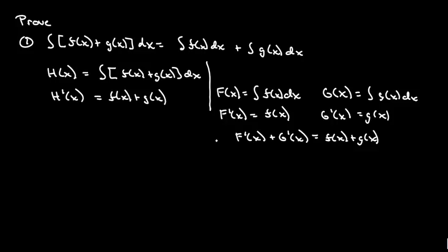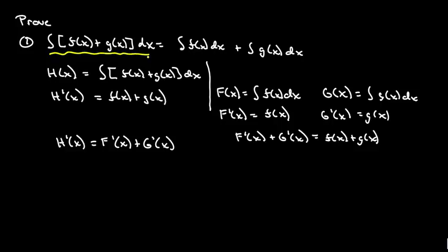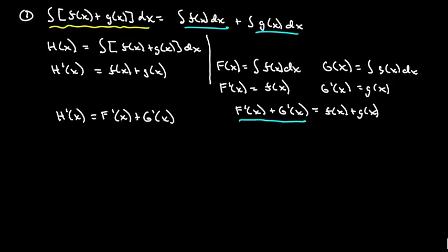So what we've got is that h prime of x on the left side is equal to F prime of x plus G prime of x. This guy is equal to this guy, which means both sides are equal to one another. Basically what this says is: if we want to find the antiderivative of two separate functions, we can split them up and find the antiderivative of each separately.